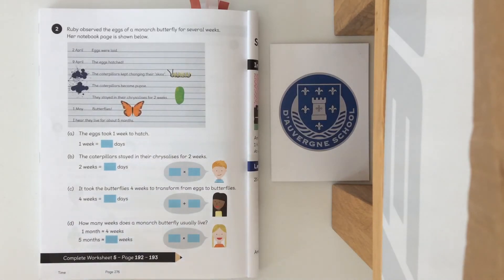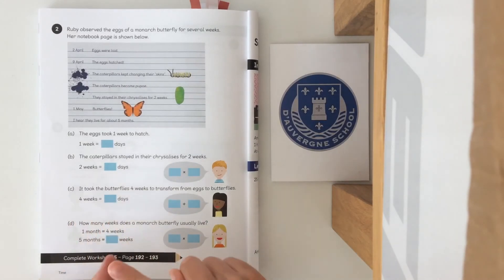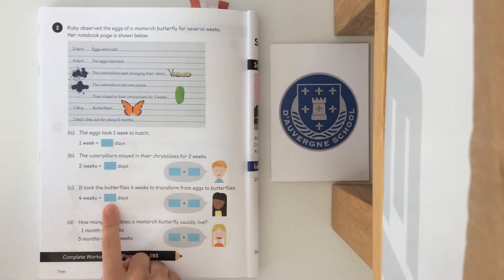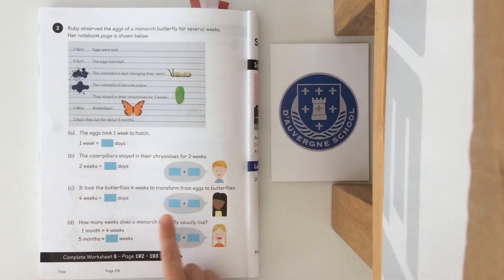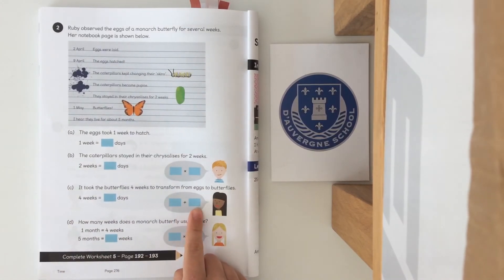Question C: four weeks equals seven, fourteen, twenty-one, twenty-eight days. Or fourteen add fourteen, which is two weeks add two weeks.